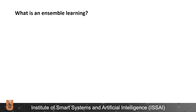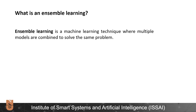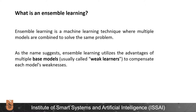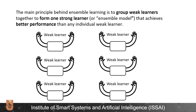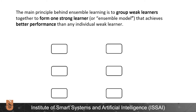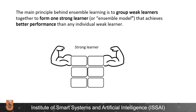So, what's ensemble learning? Ensemble learning is a machine learning technique where multiple models are combined to solve the same problem. Ensemble learning utilizes the advantages of multiple base models to compensate each model's weaknesses. The main principle behind ensemble learning is to group weak learners together to form one strong learner that achieves better performance than any individual weak learner.